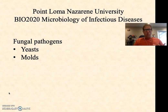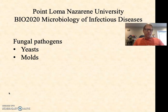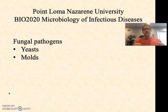Fungal pathogens tend to take one of two forms: a yeast form or a mold form. Fungi have very complicated life cycles, and some of them can cycle between a mold stage and a yeast stage. But in general, the pathogens that are yeasts live as yeasts, and the pathogens that are molds live as molds. We're going to talk about what it means to be a fungus and what it means to be a yeast or a mold, and I'll give you some specific examples of pathogens and infections from both categories.